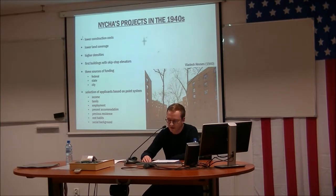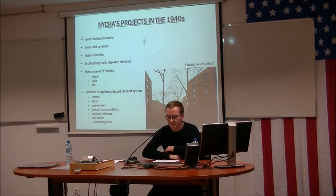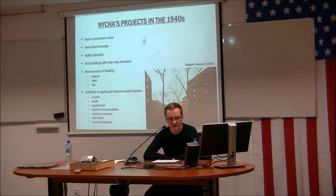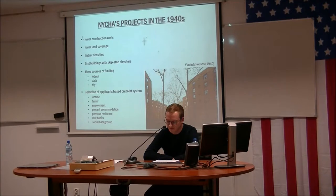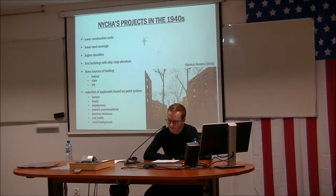This strategy allowed much more independence for NYCHA when it came to design, site location, and tenant selection. Red Hook in Brooklyn is one of the best examples of cost-cutting policies of that period. Composed of six-story buildings, it was the first project to include elevators — though these were skip-stop elevators that stopped only at the first, third, and fifth floors, a feature replicated in many buildings built afterwards. As the project was federally funded, it had to follow USHA guidelines for economic design, meaning the standard of apartments was much lower than in previous projects.